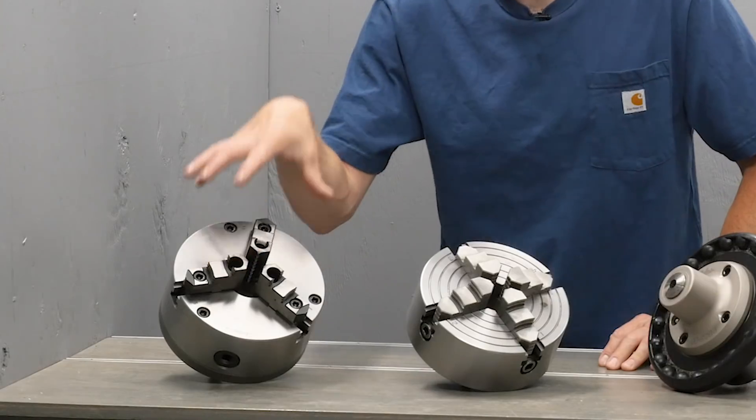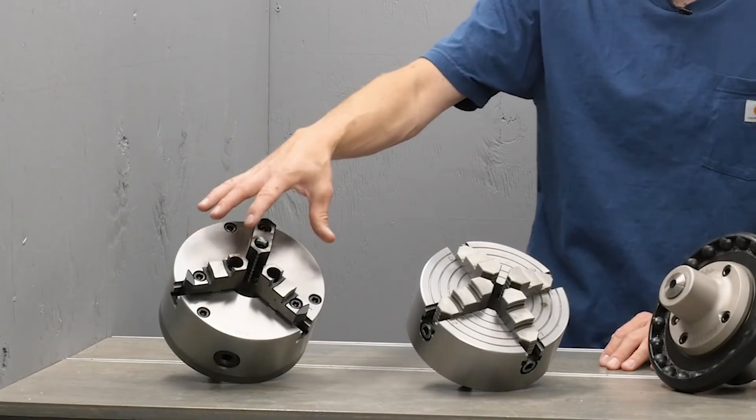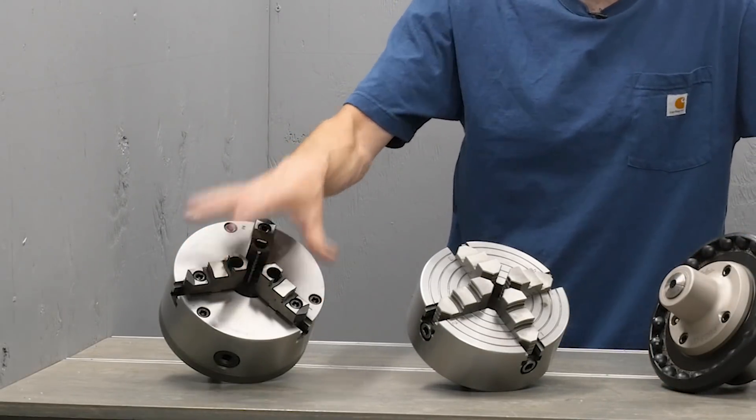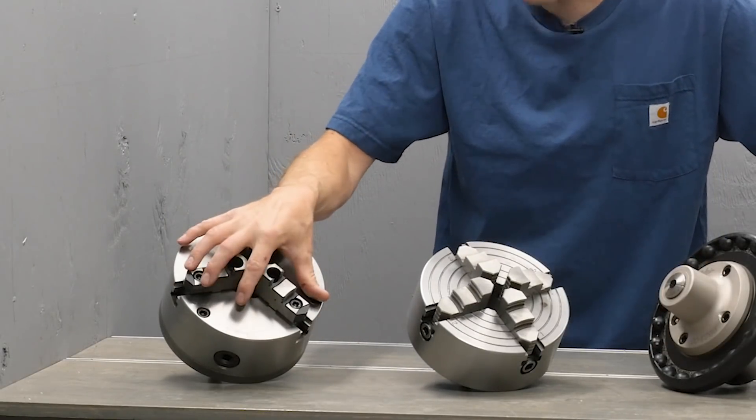The classic three jaw chuck is absolutely a mainstay, it's a staple in the collection. It's got three non-independent jaws that scroll together when you use your chuck key. It's got great clamping force, great capacity.